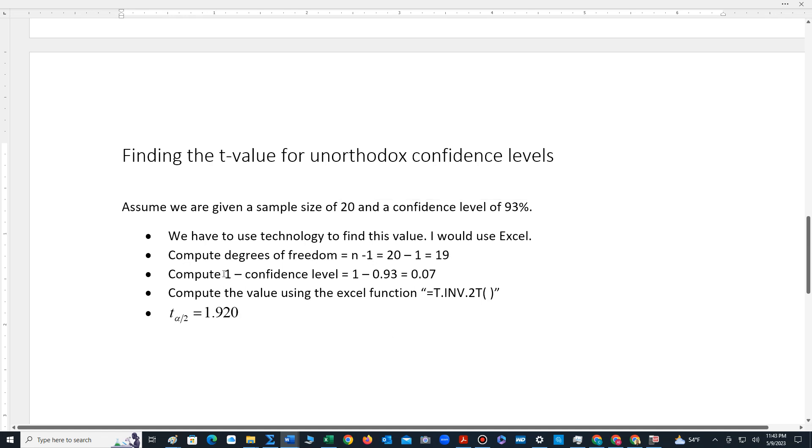We also have to compute 1 minus the confidence level. So 1 minus, we're going to convert 93 percent to a decimal. 1 minus 0.93 is 0.07.